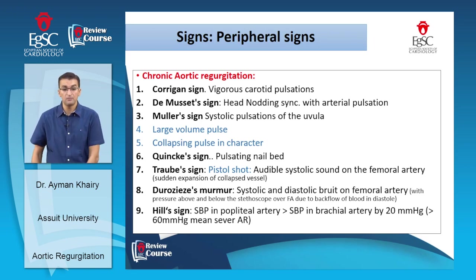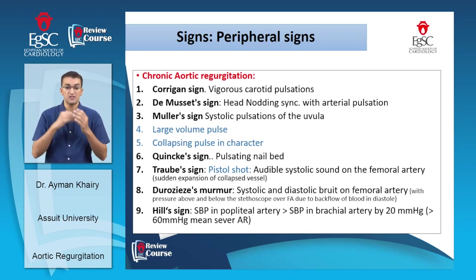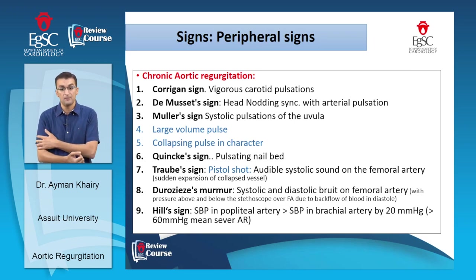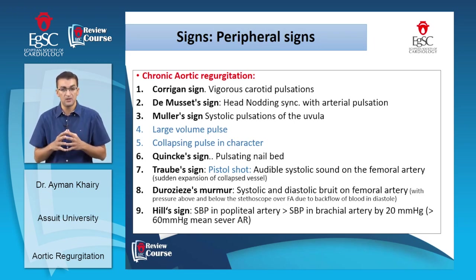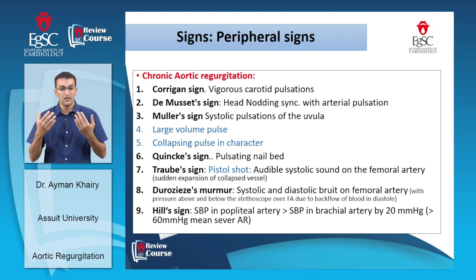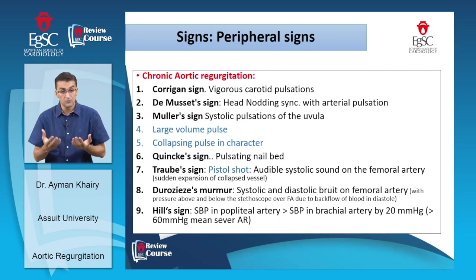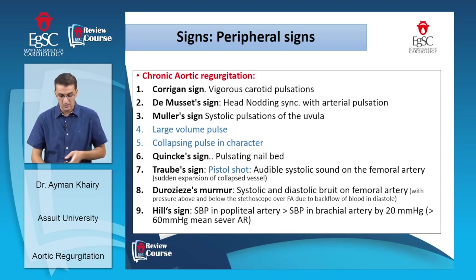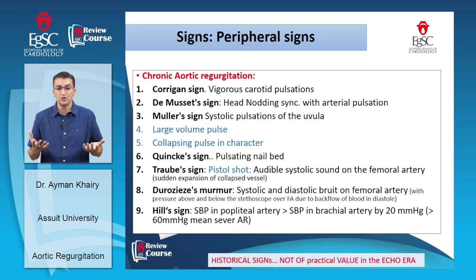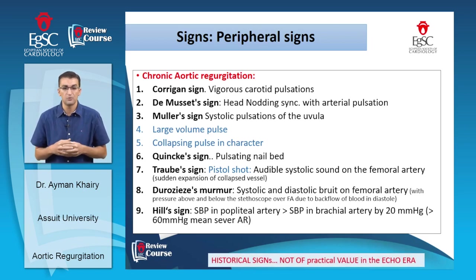Hill's sign: normally blood pressure in the popliteal artery is higher than in the brachial artery, but not more than 20 mmHg. If the difference exceeds 20 mmHg it indicates peripheral hyperdynamic circulation, and if more than 60 mmHg it indicates severe aortic regurgitation. However, all these signs are historical and not practical in the current era of echocardiography.